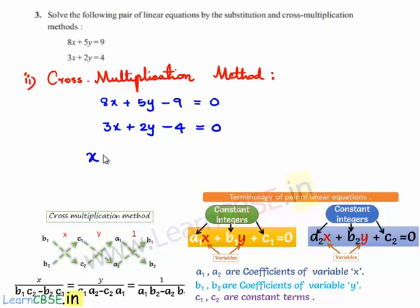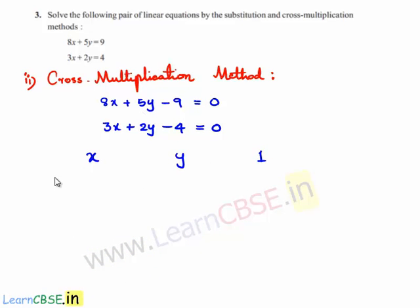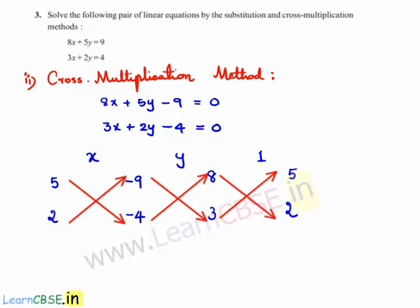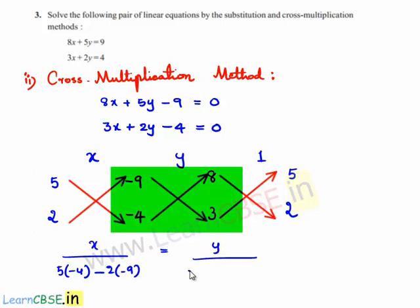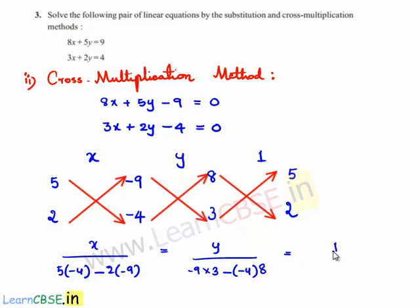First write x, y, and 1. For the first equation write the coefficient of y which is 5, and the second equation coefficient of y which is 2. Next the constant terms: minus 9 and minus 4. Next the coefficients of x: 8 and 3, and again the coefficients of y: 5 and 2. So we can write x divided by (5 times minus 4 minus 2 times minus 9), equals y divided by (minus 9 times 3 minus minus 4 times 8), equals 1 divided by (8 times 2 minus 3 times 5).